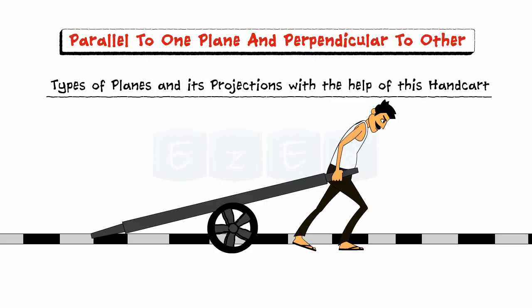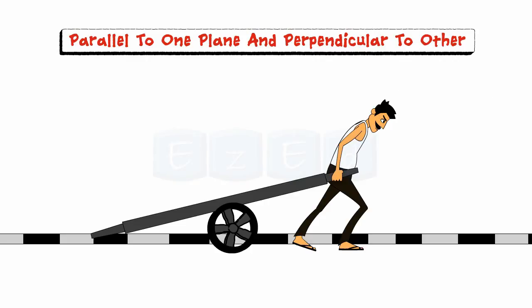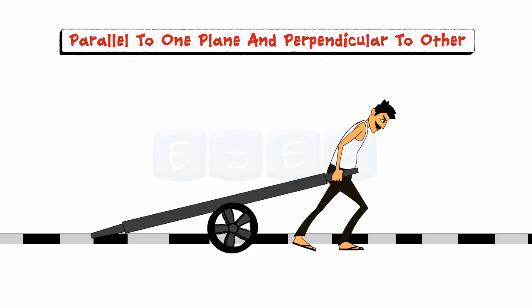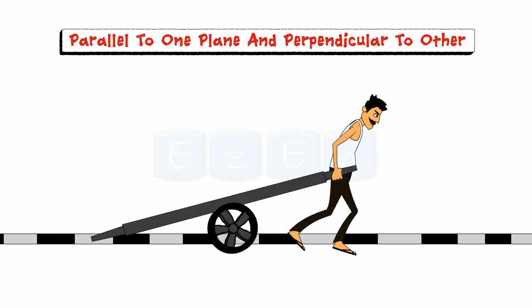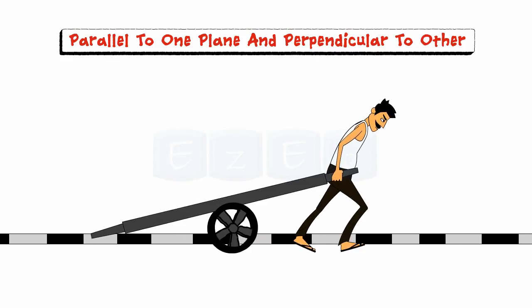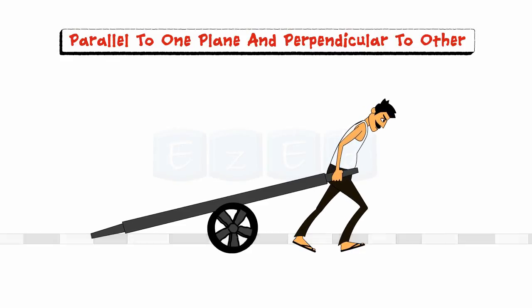Consider a typical scenario where a worker is rolling a handcart as shown. The handcart basically consists of two planes, namely the rectangular platform and the circular wheel.